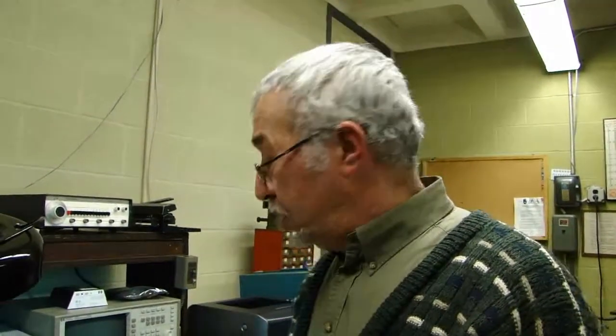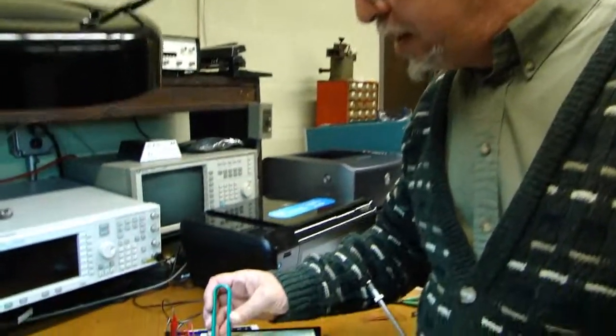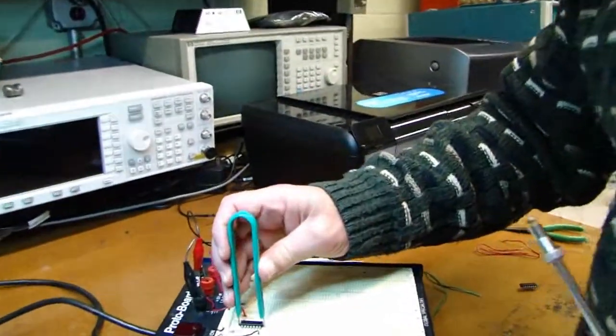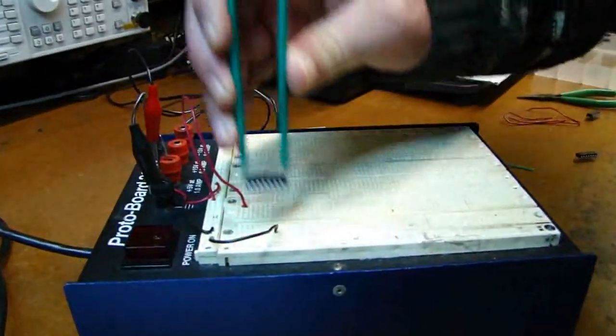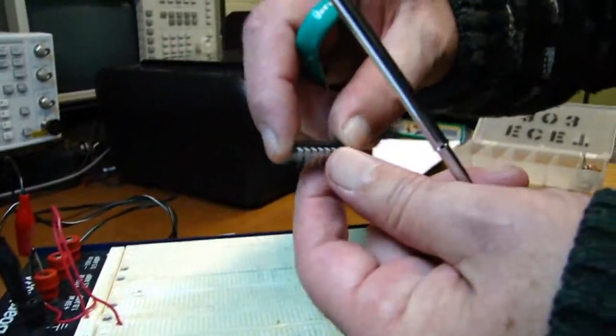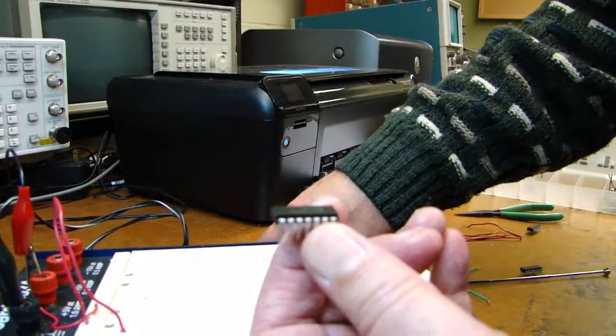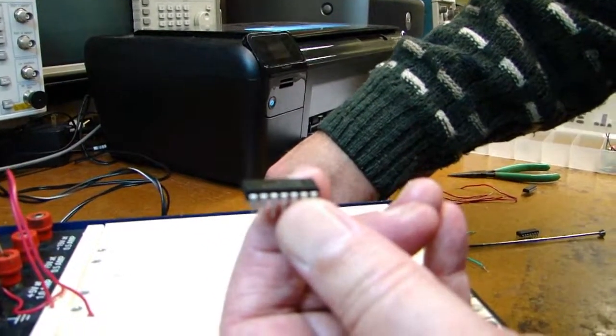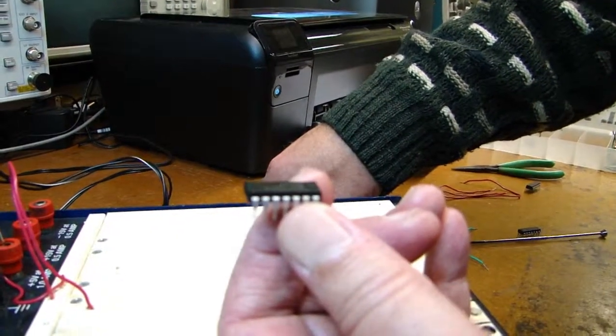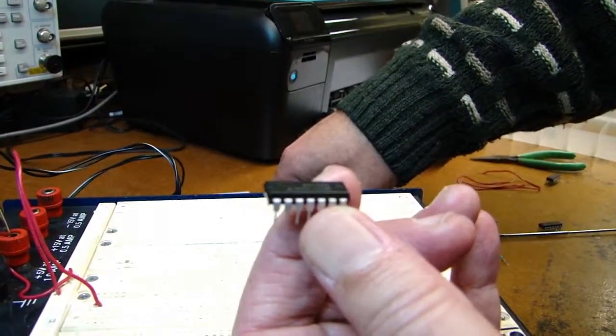So today we're going to be looking at the 7400 and we're going to test the way it operates by looking at what the output status would be given different conditions of the input. The first thing you do is you see that this 7400 which is a NAND gate IC of the TTL type which means the operation works under 5 volts for a very narrow range and you need to power up this IC to be able to make it work in a circuit.